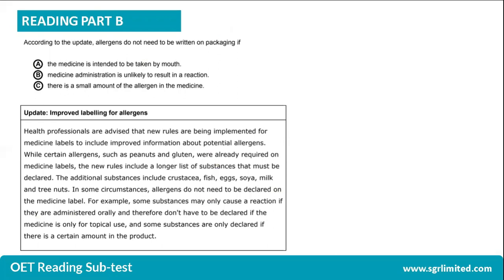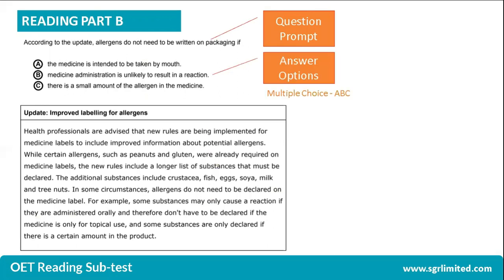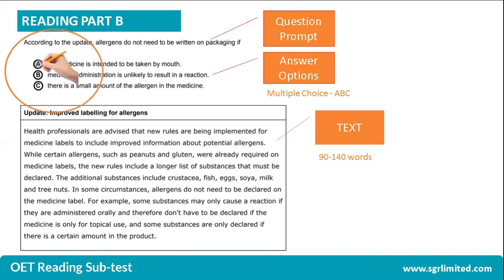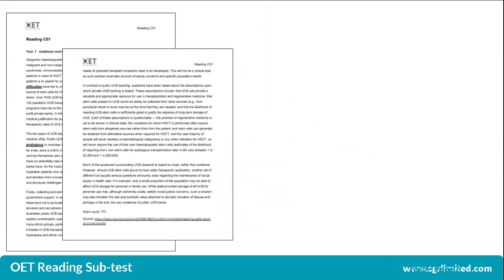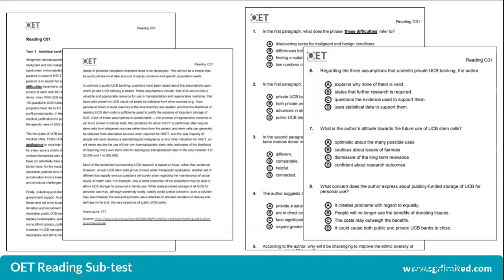Reading Part B is much easier to answer compared to Reading Part C because the test is within the same page. You will have the question prompt at the top, your answer options A, B, and C in the middle, and your short text at the bottom, which contains roughly 90 to 140 words. Your job is to pick and choose the right answer by highlighting or shading the correct multiple-choice option. For Part C, your texts are written on two separate pages while your questions are on another two separate pages. This makes Reading Part C slightly more challenging to answer because the text, the questions, and the answer options are on different pages.